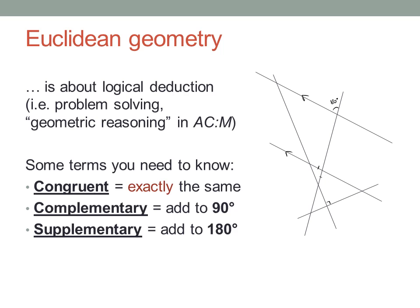Before we start, there are some mathematical terms you need to know. We'll use these words to describe relationships between different angles. Congruent means exactly the same. Complementary means angles that add up to 90 degrees in total. And supplementary means they add up to 180 degrees.